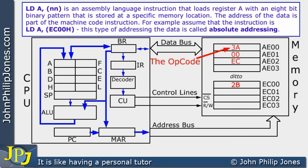For this assembly language instruction we can see that the opcode and the data are in different parts of the computer's memory, as shown by these arrows. This area of the computer's memory — these three bytes — are the machine code representation of this assembly language instruction.